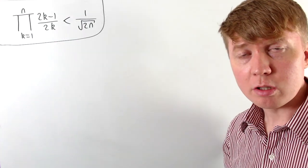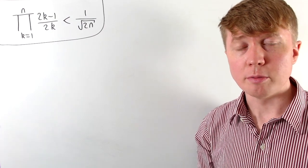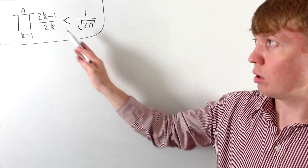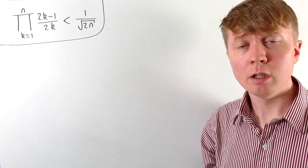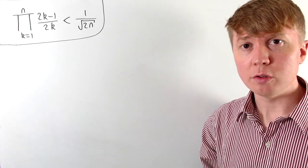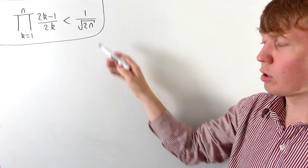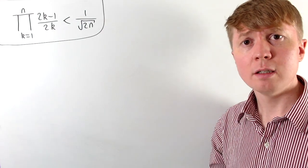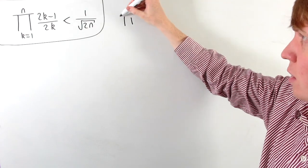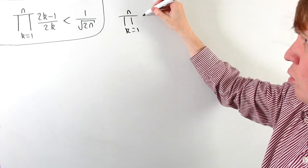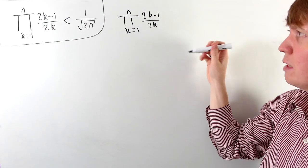Now we'll see how this result can be generalised to a product up to 2n. We've got the product of all of our odd-over-even fractions: one half times three quarters and so on up to (2n−1) over 2n. We want to show that this is less than 1 over the square root of 2n. We use the same setup: consider the product from k=1 up to n of (2k−1) over 2k — the product of all of our odd over even terms.